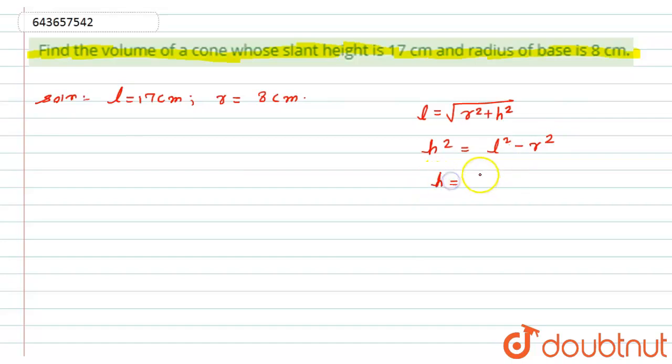So h equals square root of l squared minus r squared, which becomes square root of 17 squared minus 8 squared. 17 squared is 289 minus 8 squared is 64.